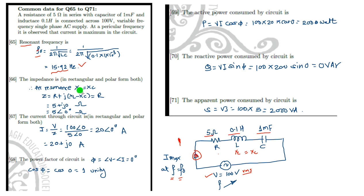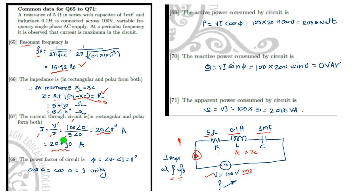At resonance XL equals XC, so Z = R + j(XL − XC). This part reduces to zero, hence Z = R = 5 + j0, that is 5 at an angle of 0 degree ohm. The current is voltage divided by impedance: 100∠0° divided by 5∠0° gives 20∠0°, which in rectangular form is 20 + j0. This indicates that voltage and current are in phase.